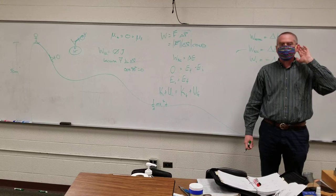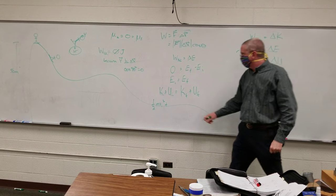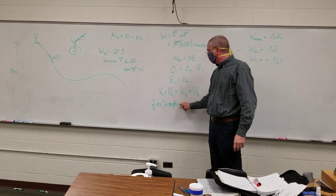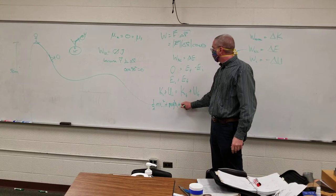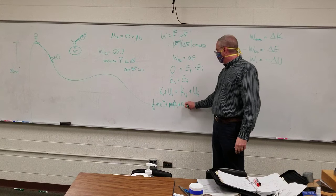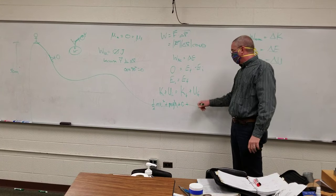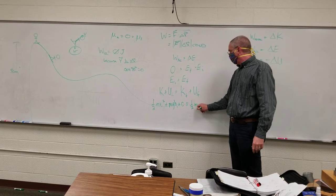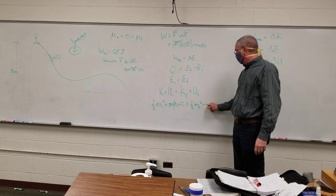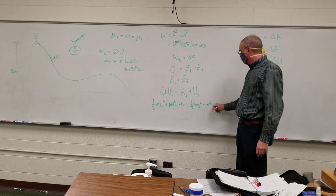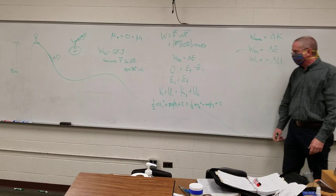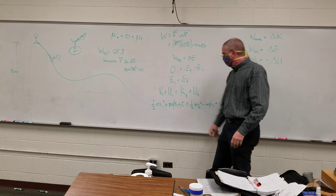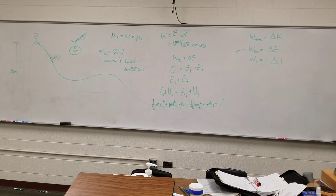It's mgh plus constant. So: mgh_initial plus constant — I'll just use a letter, I don't think we're using c for anything — equals one half mv_final² plus mgh_final plus constant. Now right off the bat the constant goes away, which is generally why it's not written.